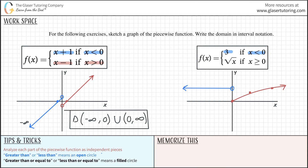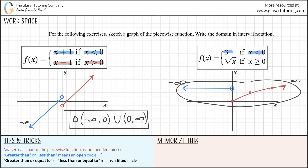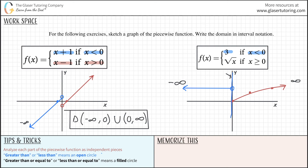Now we can write the domain. The domain is from the leftmost part of the graph, which goes to negative infinity, all the way to the rightmost part, which goes to positive infinity. You might ask: what about x equals 0 in the middle — do I need two separate pieces? No. For x equals 0, y is actually defined — the square root function gives a filled-in circle at the origin. So y is defined when x is 0, and it's part of the domain. The domain is simply negative infinity to positive infinity: (-∞, +∞).